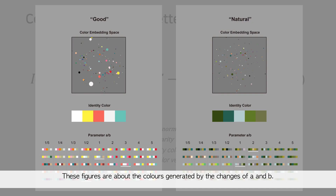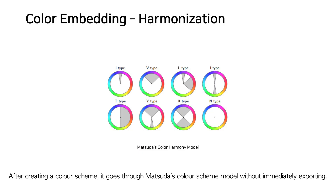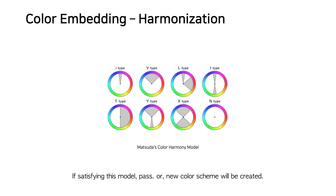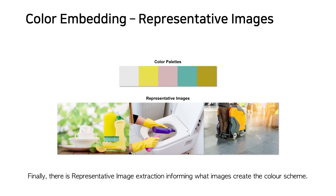This figure shows the colors generated by changes in the A and B parameters. After creating a color scheme, it goes through Masuda's color scheme model before exporting. If the model satisfies the criteria, it will pass; otherwise, a new color scheme is generated. Finally, there is representative image extraction, informing users which images created the color scheme.